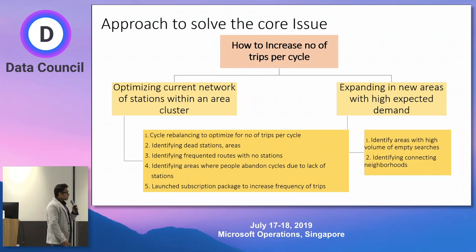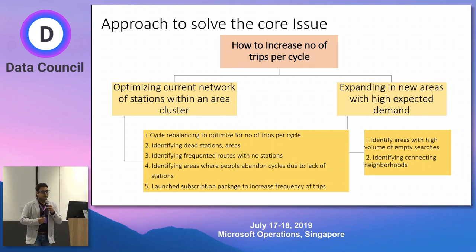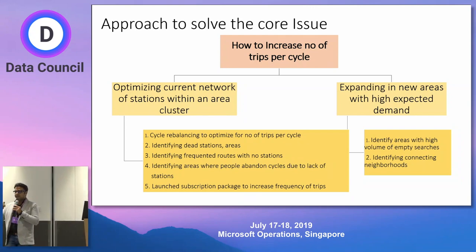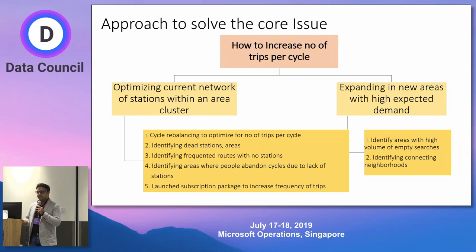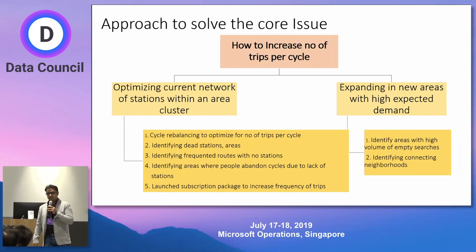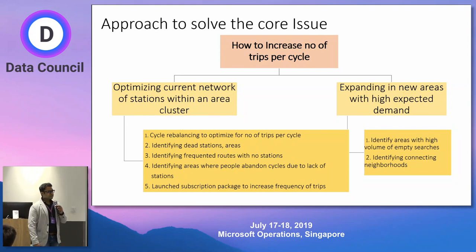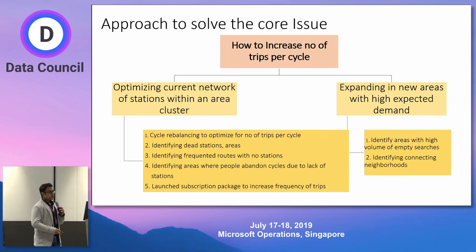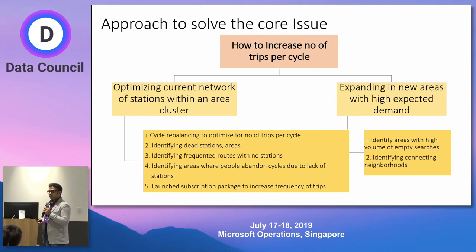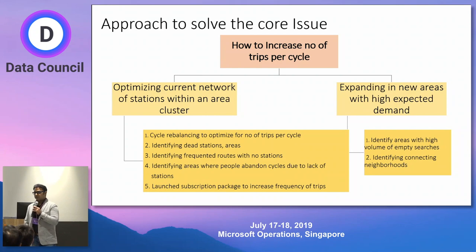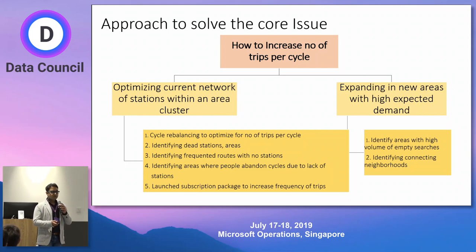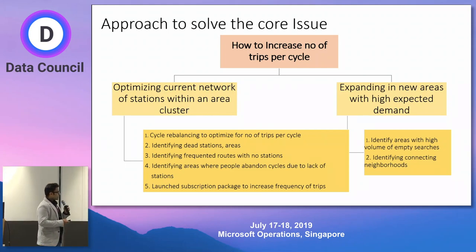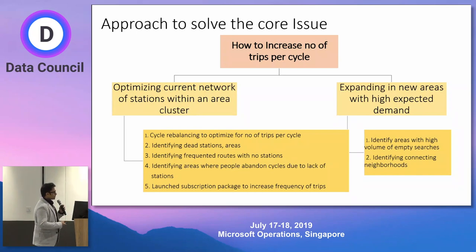First, we need an algorithm to rebalance cycles so that anytime someone wants a cycle they get one — I should not have leakage in demand. Second, identify dead stations where cycles are sitting unused — that is dead inventory. Third, identify frequented routes. Because we have GPS trackers, we know where people are going. We can find out whether they're going to a supermarket and whether we have a station there. We also track abandonment of cycles.